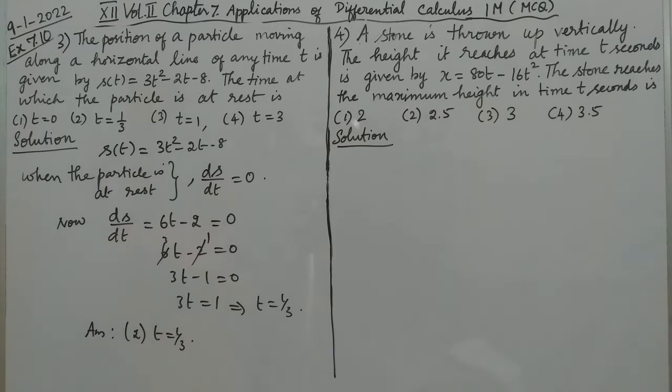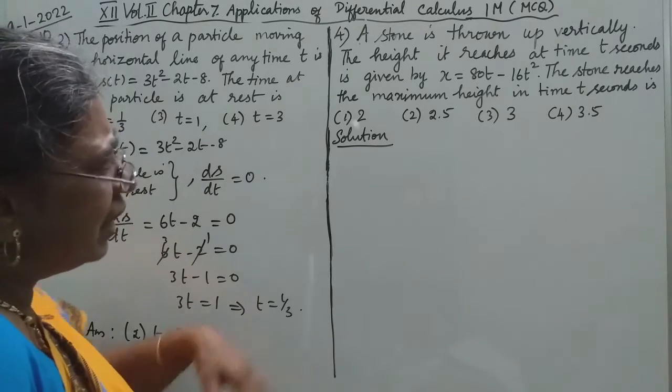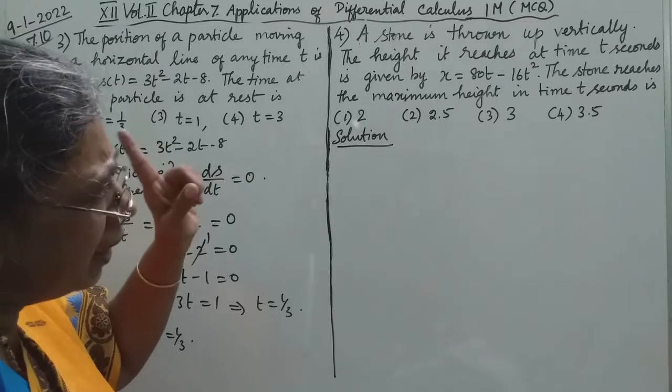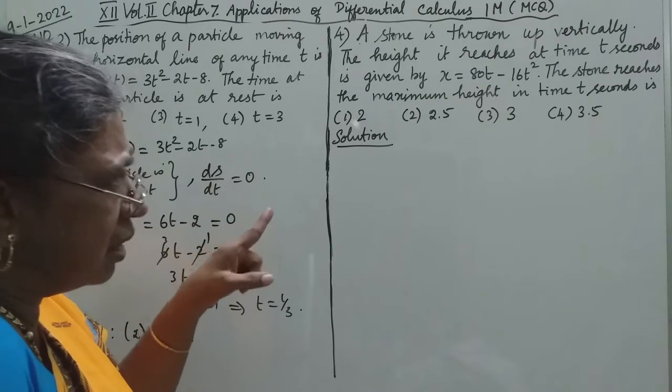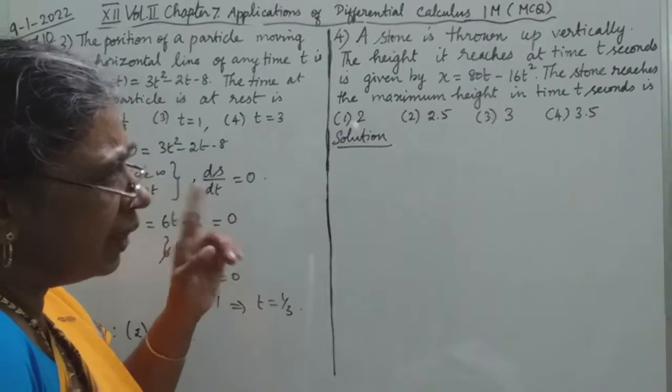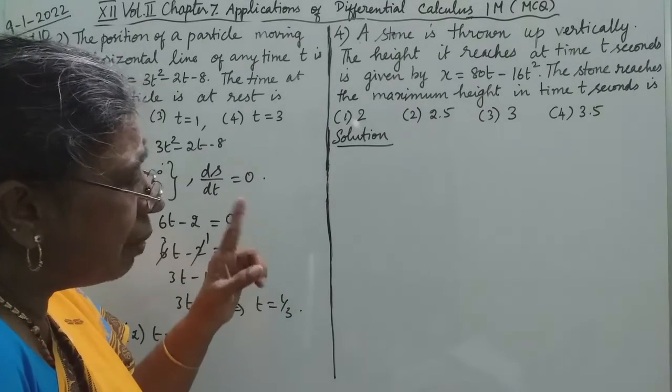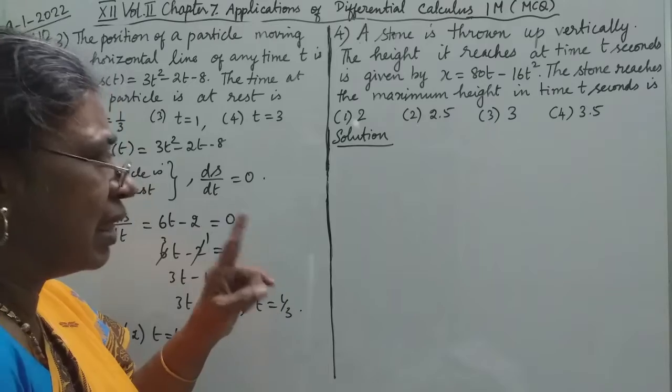Now let's move to problem number 4, which is a similar problem. A stone is thrown up vertically. The height is given by x = 80t - 16t². At what time t does the stone reach maximum height?